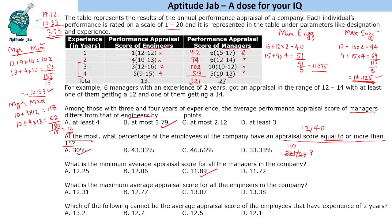Now, the maximum average appraisal score for all engineers in the company. For 1-year experience: 1 person only, obviously 12. For the next group, assume all get 13 except the forced minimum of 10; so 13 into 4 = 52 minus 3 = 49. Then 16 into 3 = 48 minus 4 = 44. Then 15 into 5 = 75 minus 6 = 69. Adding: 12 + 49 + 44 + 69 = 174. Wait — there are 13 engineers total, so 174 ÷ 13 ≈ 13.38.